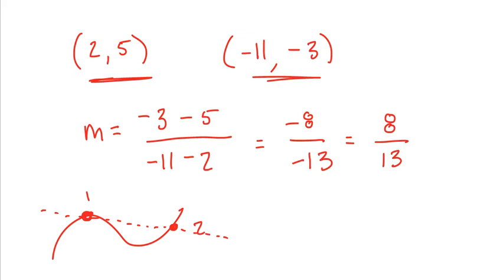If I wanted to find what we call the instantaneous rate of change at a single value — what is the slope at this one point — that does require the derivative, because that is exactly what the derivative does for us. It finds the rate of change, the slope, at that one single point.